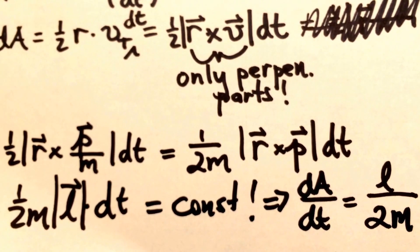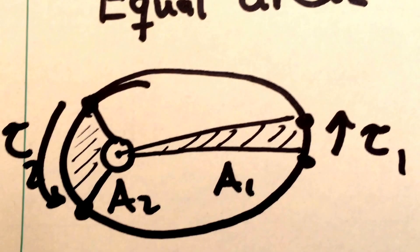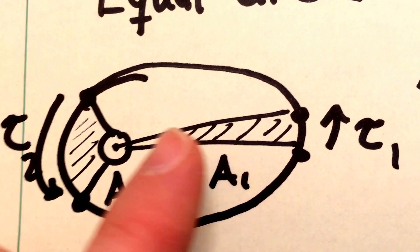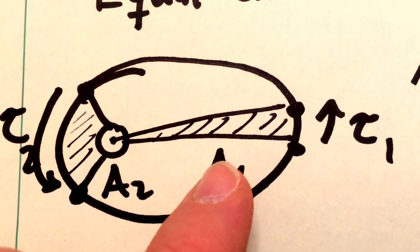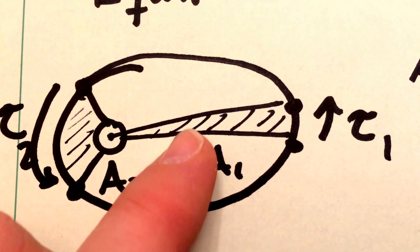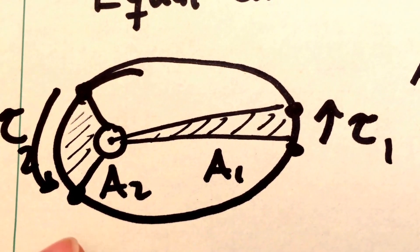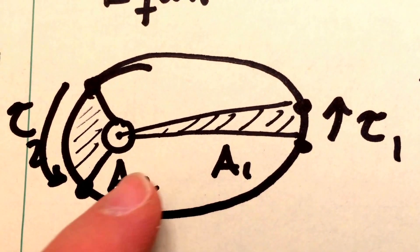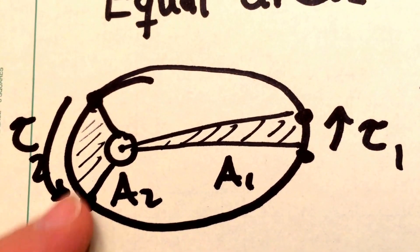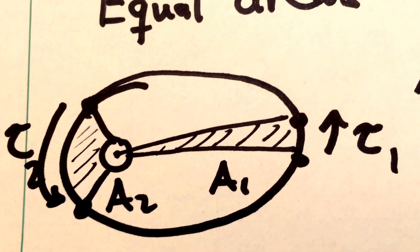Areas are swept out at the same rate throughout the ellipse. When the planet is very far from the sun and the radius vector is really big, the planet is moving very slowly because the radius vector sweeps out a lot of area in just a short amount of time. Those areas are equal to the areas swept out when the planet is very close to the sun, and therefore the planet has to be moving very quickly there because these areas are very short and squat.